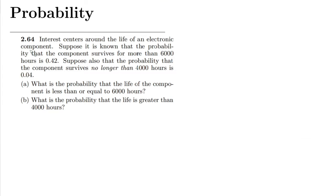Welcome back to my channel. This is question 2.64. It says that interest centers around the life of an electronic component. It is known that the probability that the component survives for more than 6000 hours is 0.42, and the probability that the component survives no longer than 4000 hours is 0.04. Part a asks: what is the probability that the life of the component is less than or equal to 6000 hours? Part b asks: what is the probability that the life is greater than 4000 hours?